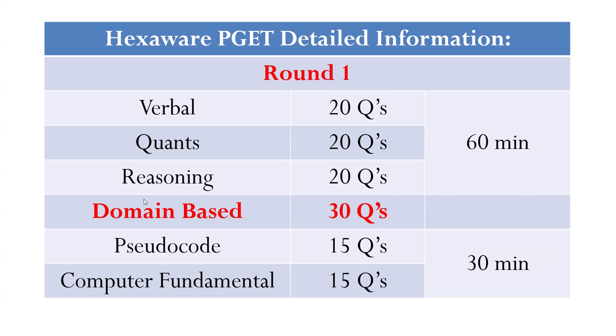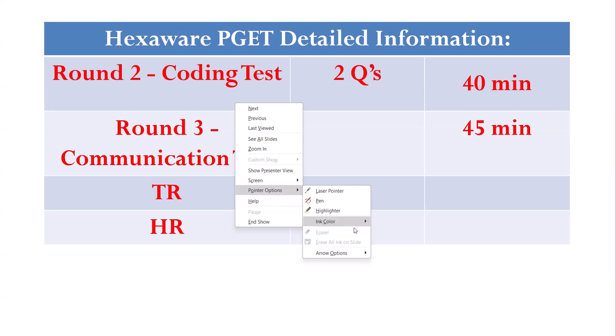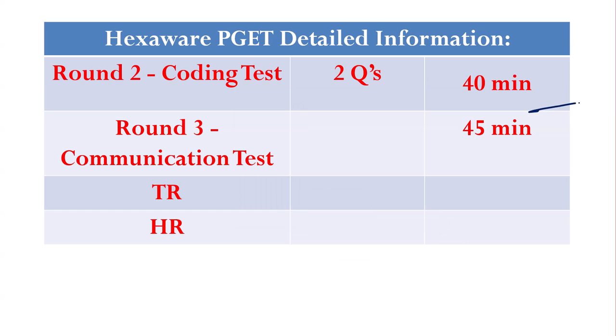Coding. We got the inputs that they are giving two questions in coding. When suppose you are cleared round one, for those students only round two will come. I repeat, this is only for the students who are done with round one. Let's say you are done with round one, then only you are allowed to go for round two. In round two, you have coding test and you will get two questions, 40 minutes is the time. And if you cleared round two, then only round three.